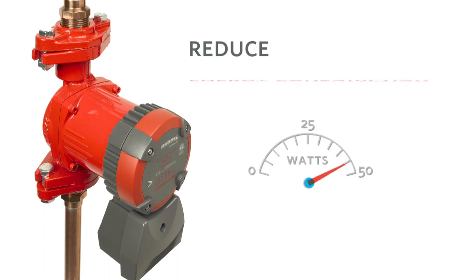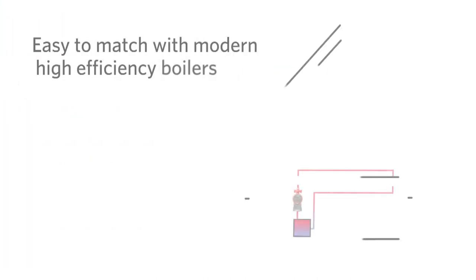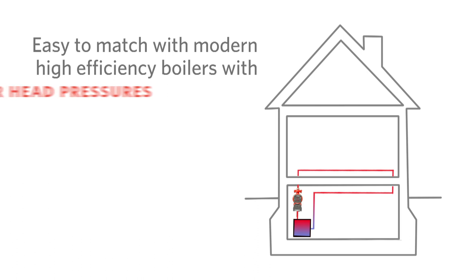The Compass technology offers far superior energy efficiency compared to a traditional fixed speed circulator with savings of up to 70%. The Compass can easily match the higher head pressures and lower flows needed with modern high efficiency boilers.